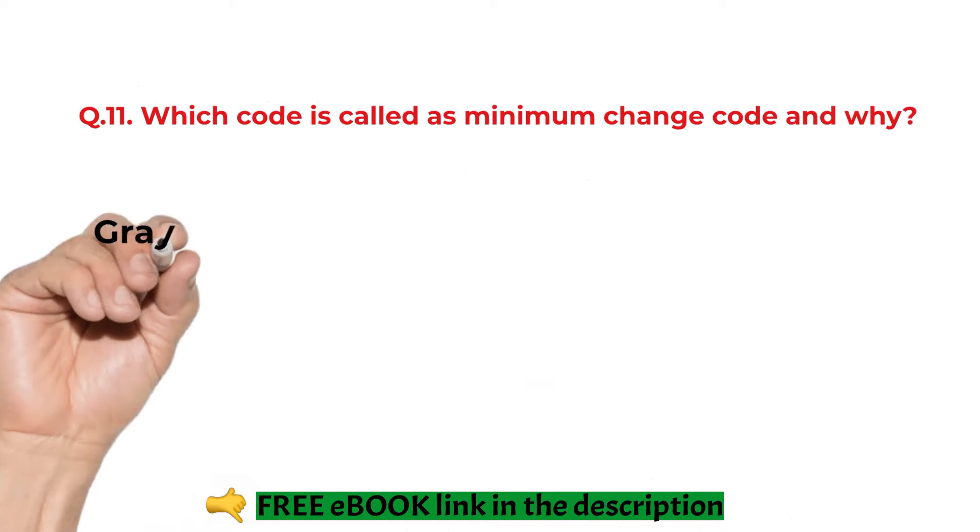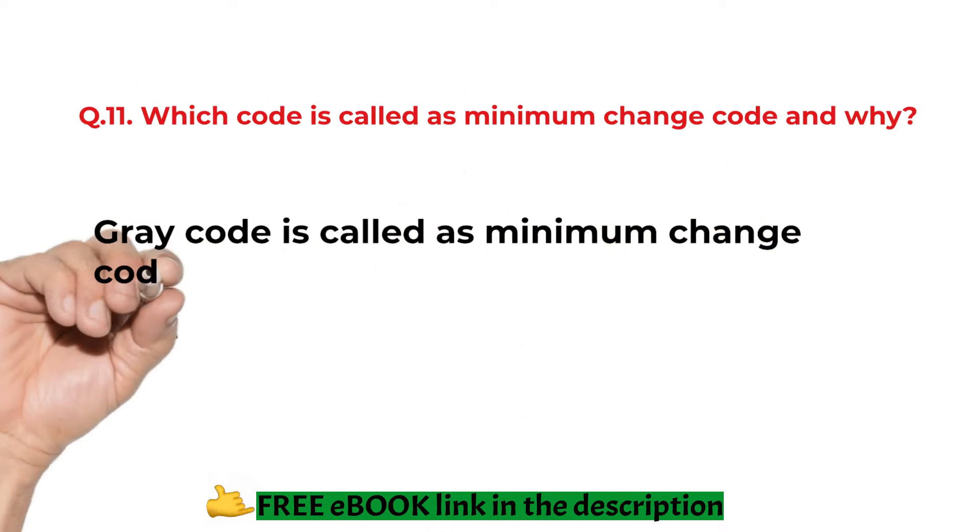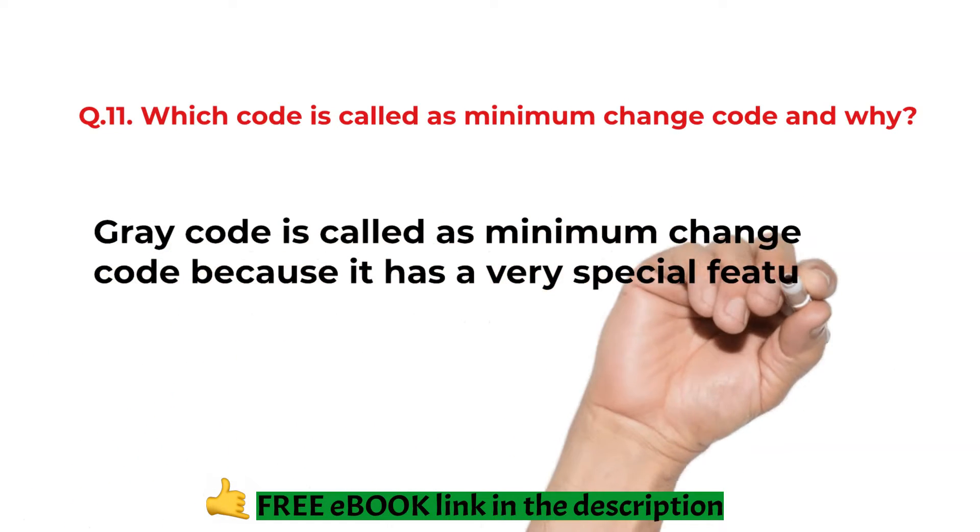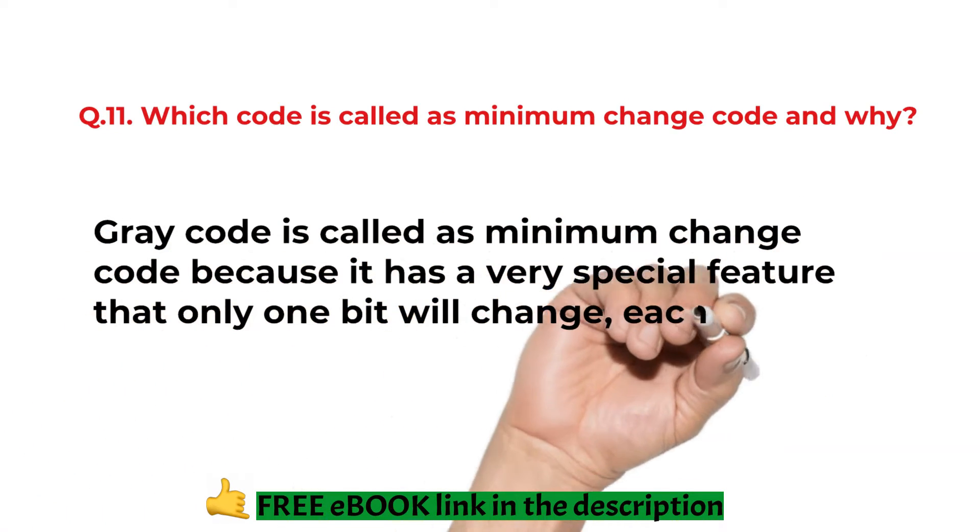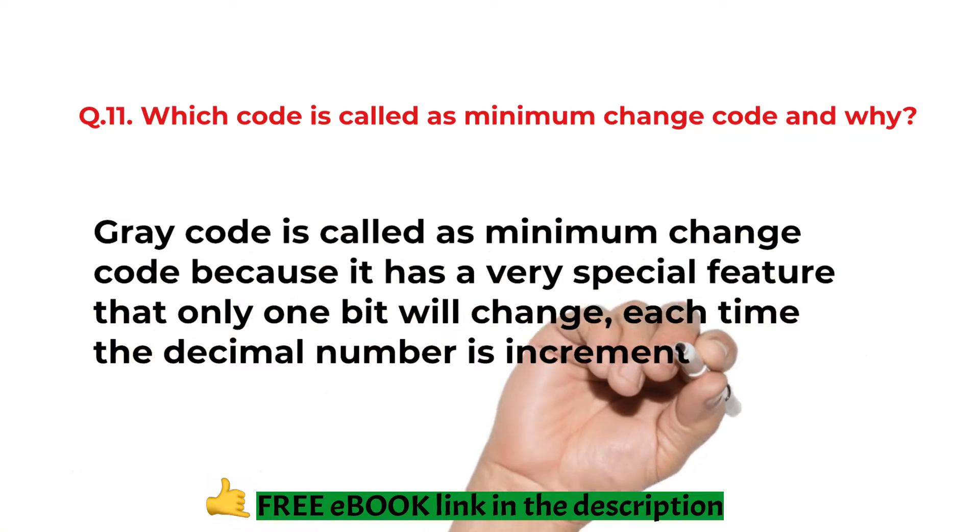Which code is called as a minimum change code and why? Gray code is called as a minimum change code because it has a very special feature that only one bit will change each time the decimal number is incremented.